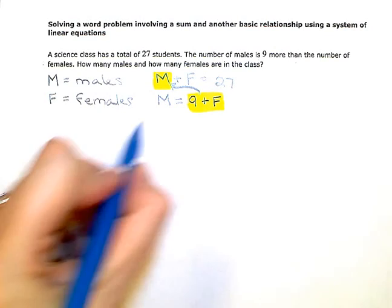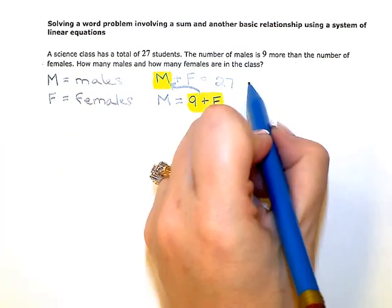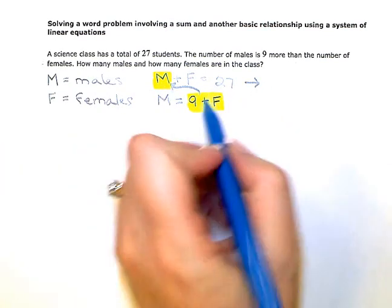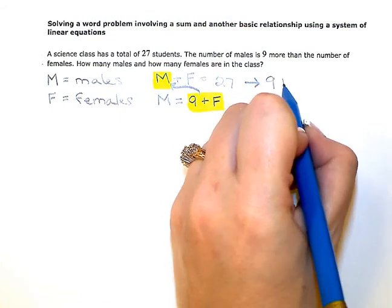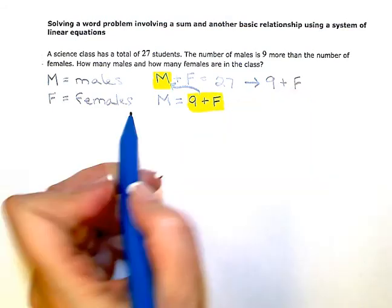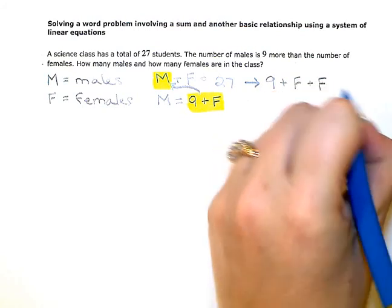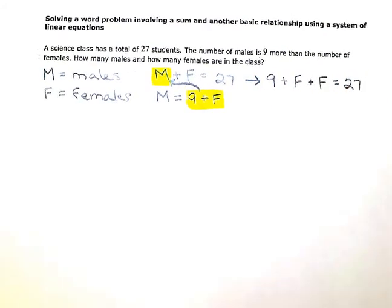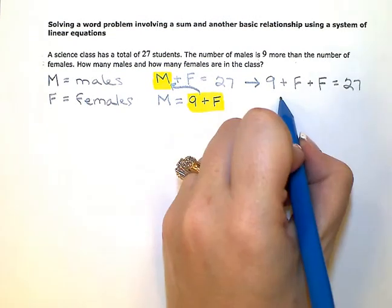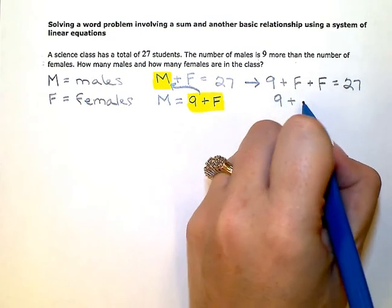If I rewrite that, instead of M I put nine plus F, plus another F is equal to 27. Then I'm going to combine like terms and simplify. So nine plus two F is equal to 27.